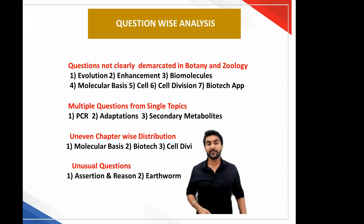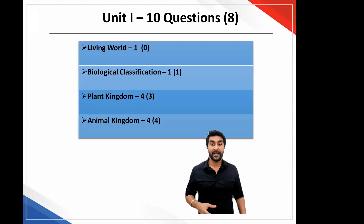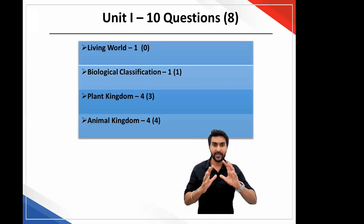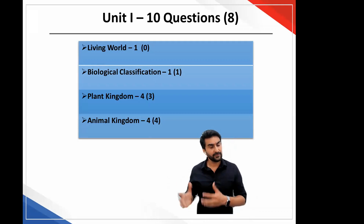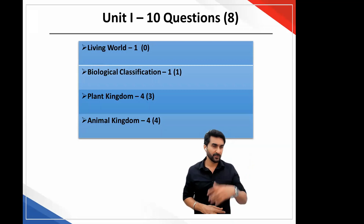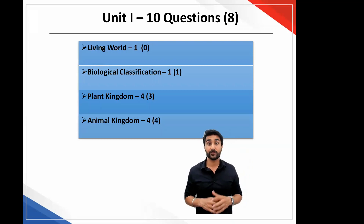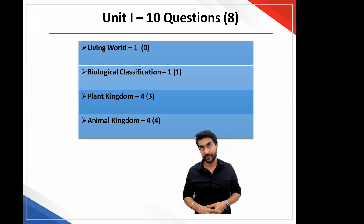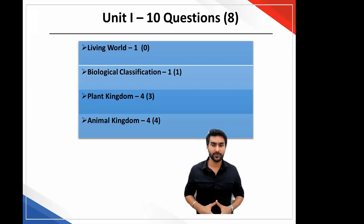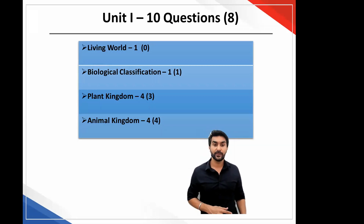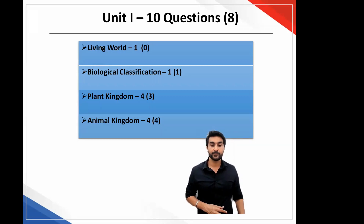So this was the understanding of the question-wise analysis of the NEET paper. We move next to the discussion on the unit-wise distribution of the paper as opposed to what you saw in 2020. Unit one had 10 questions this year — last year there were 8. Out of that, living world had a single question, single question for biological classification, and the major chunk coming from plant kingdom and animal kingdom. You generally get 8 to 10 questions from unit one, so this was within expected lines.